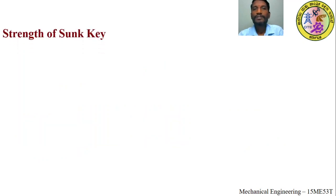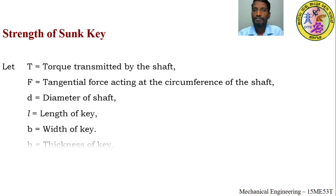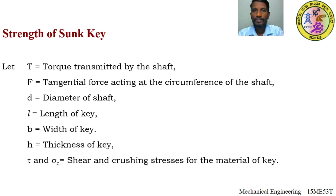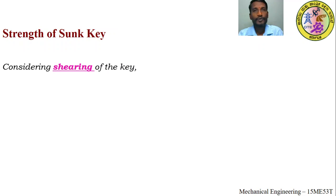Now come to the strength of the sunk key. The parameters are: T = torque, F = tangential force, D = diameter of the shaft, L = length of the key, b = width of the key, h = thickness of the key, σc = compressive or crushing stress, and τ = shear stress. There are two types of stresses produced in the key by the rotation of the shaft: shearing stress and crushing or compressive stress.